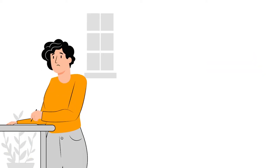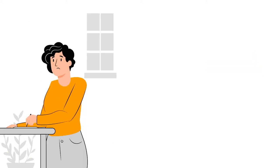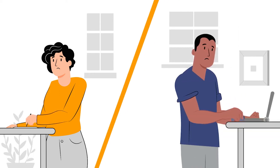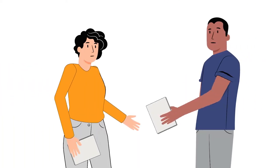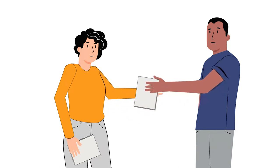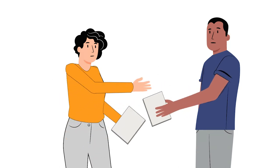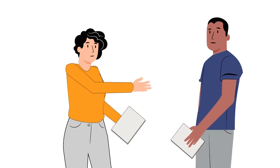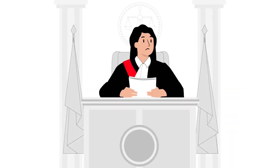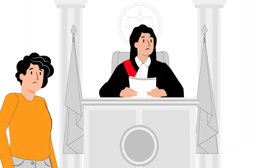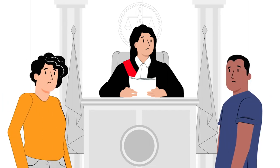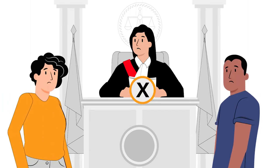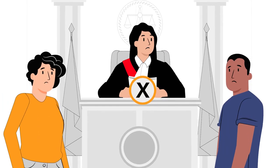You can also use these forms to help you and your partner reach an agreement about support and property out of court. It's very important that you and your partner share all your financial information honestly. If you lie or leave out important information, your agreement or court order can be changed.